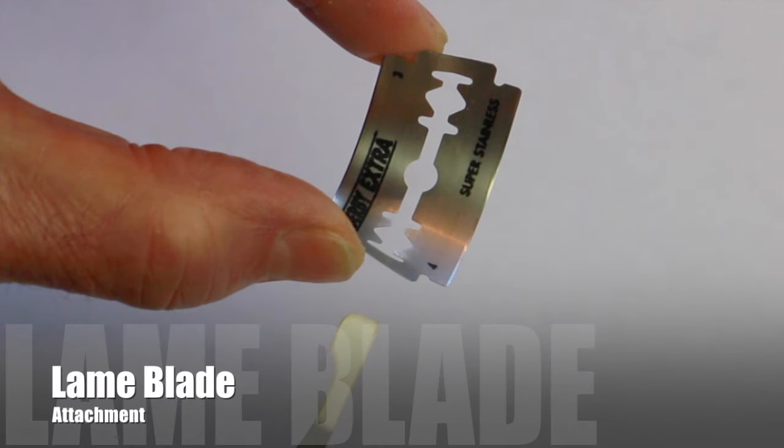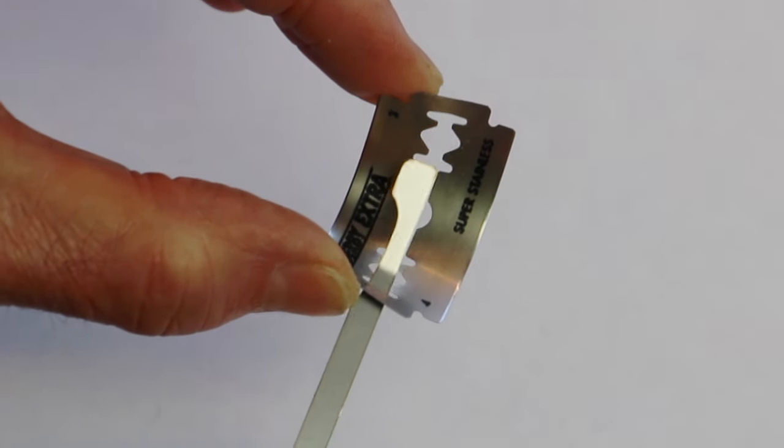Hold the ends of the razor blade between your thumb and forefinger and bend the blade slightly. Place the blade on the lomb like this.